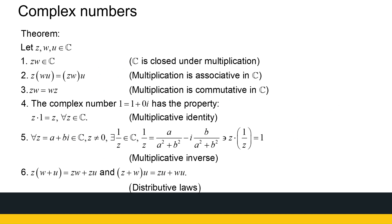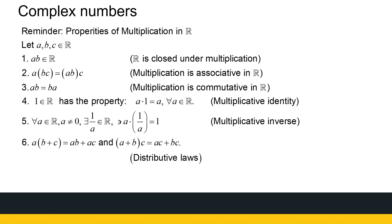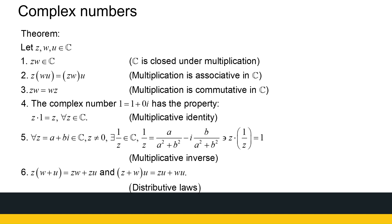Like addition, multiplication of complex numbers also has a set of properties. Multiplication is closed under complex numbers, associative, and commutative. The multiplicative identity is the number one — multiplying any complex number by it leaves the number unchanged. There is also a multiplicative inverse, which has a somewhat complex-looking formula, and it has the property that multiplying z by its inverse gives 1. Combining addition and multiplication, the distributive law also holds for complex numbers.